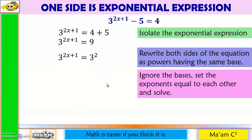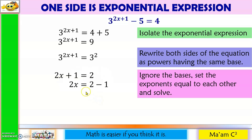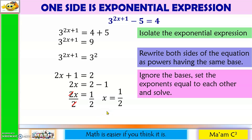Step 3: ignore the bases, set the exponents equal to each other and solve. Because we have the same base, let us focus our attention on the exponents. Let us equate them. So 2x plus 1 is equal to 2. Then let us solve for x. Let us move 1 to the other side, so it will become minus 1. And then 2 minus 1 is 1. So 2x is equal to 1. To solve for x, let us divide both sides by 2. So 2 will be cancelled out, and we have x is equal to 1 half.